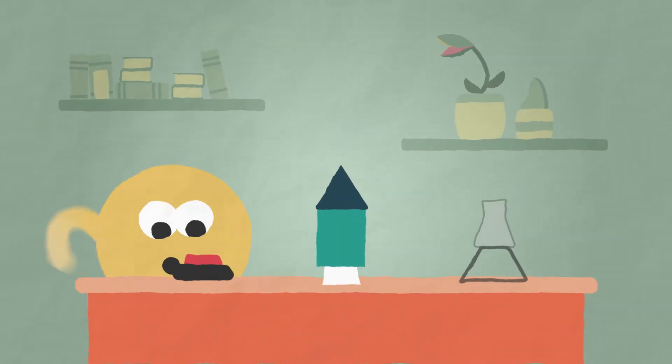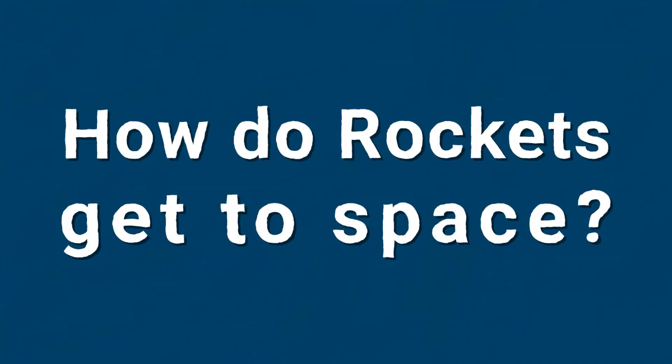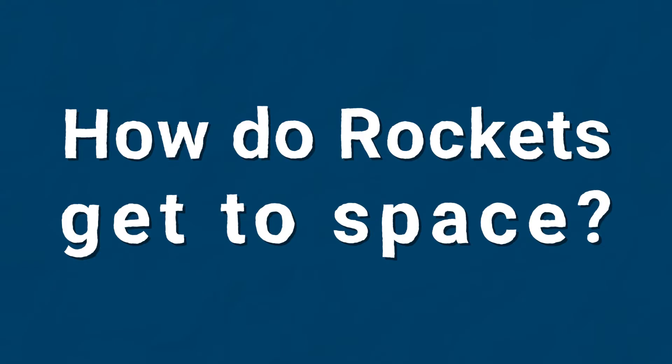Since the 1960s, NASA has successfully launched around 200 manned missions to space. But how do rockets work?